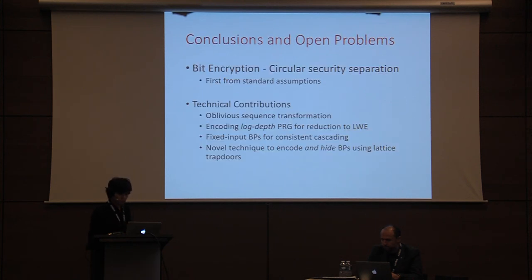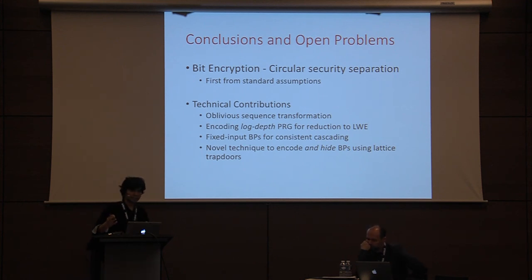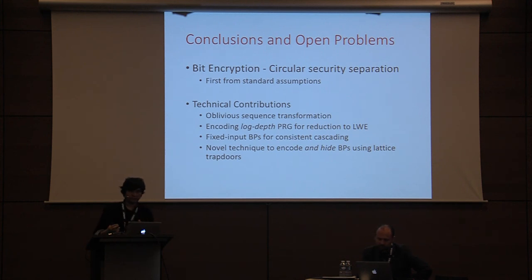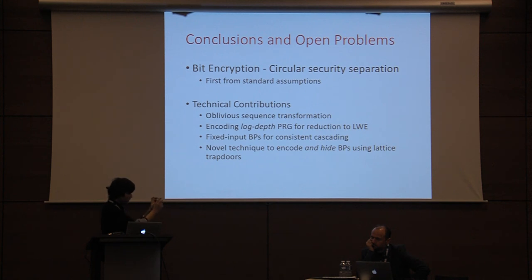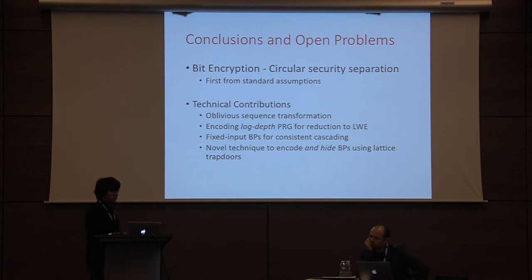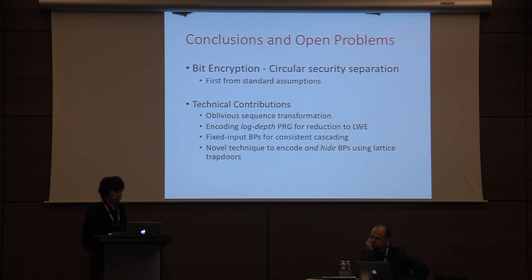To conclude, in this work we gave a separation result for circular security and semantic security — the first from standard assumptions. We also made several technical contributions. The central technical contribution is a novel technique to hide and encode branching programs using lattice trapdoors. We gave a technique called oblivious sequence transformation for performing joint trapdoor sampling, and we show how to encode log-depth PRGs using lattice trapdoors. We also require branching programs to be fixed-input branching programs for consistent cascading.